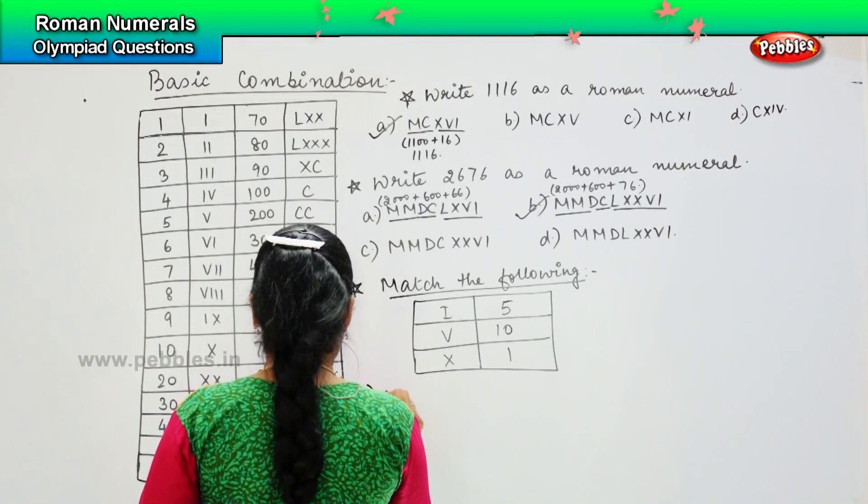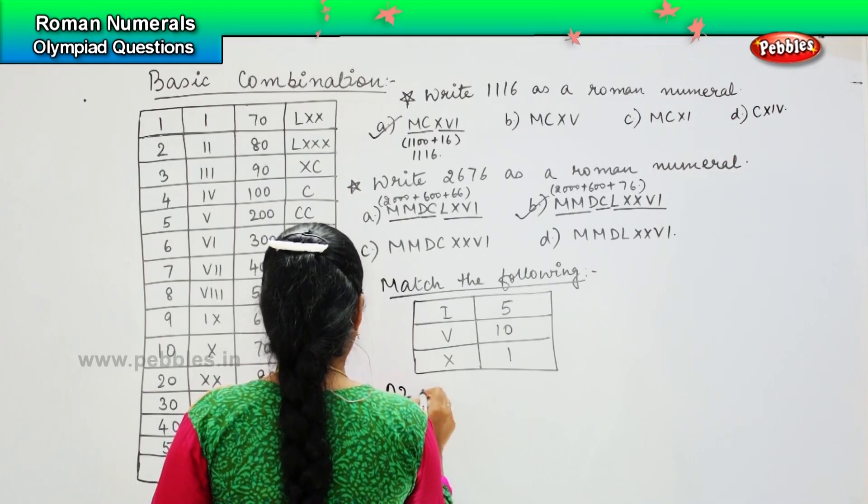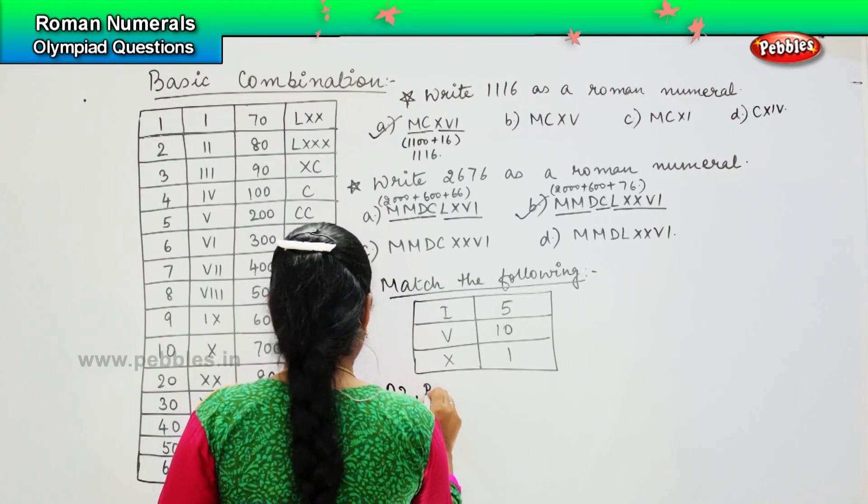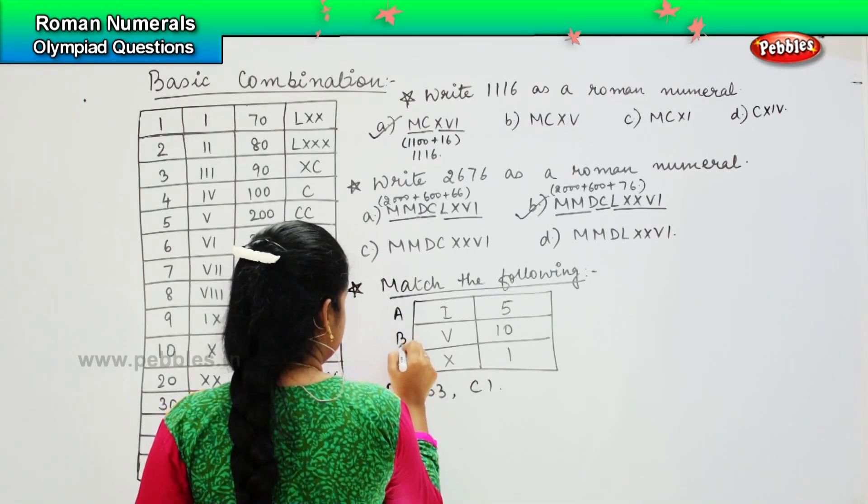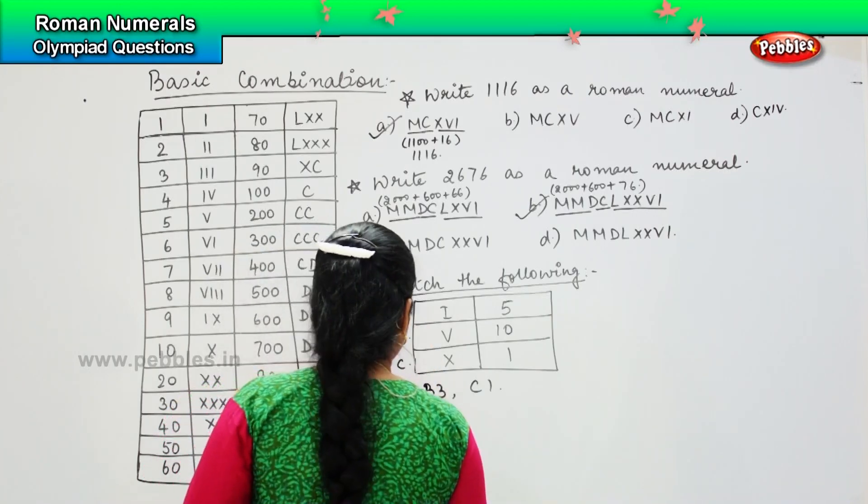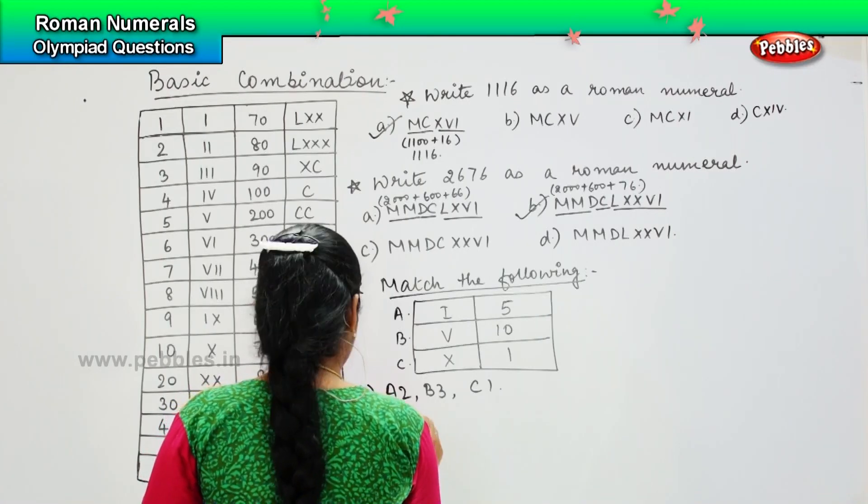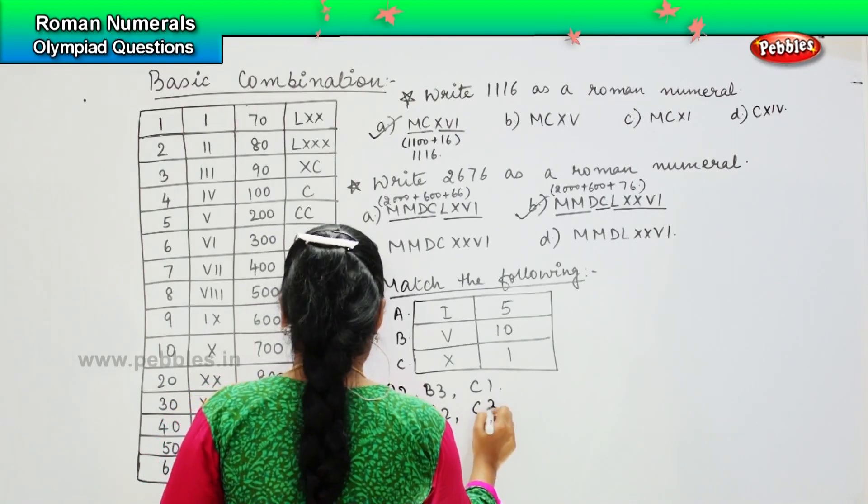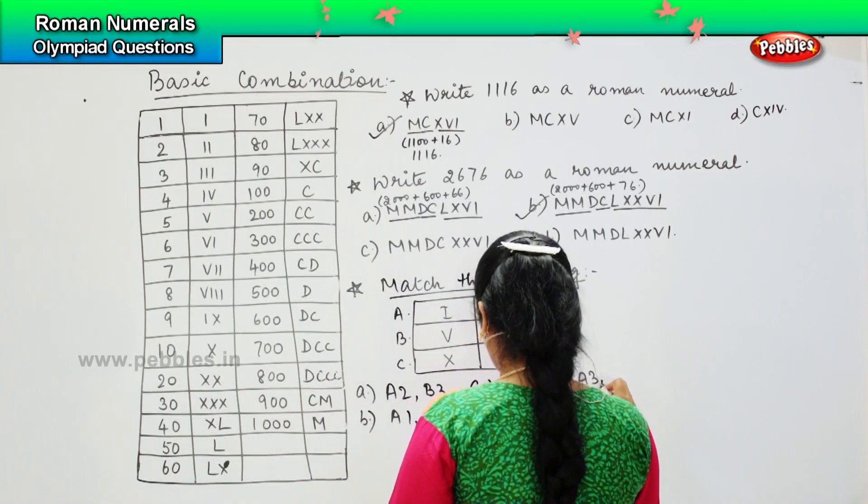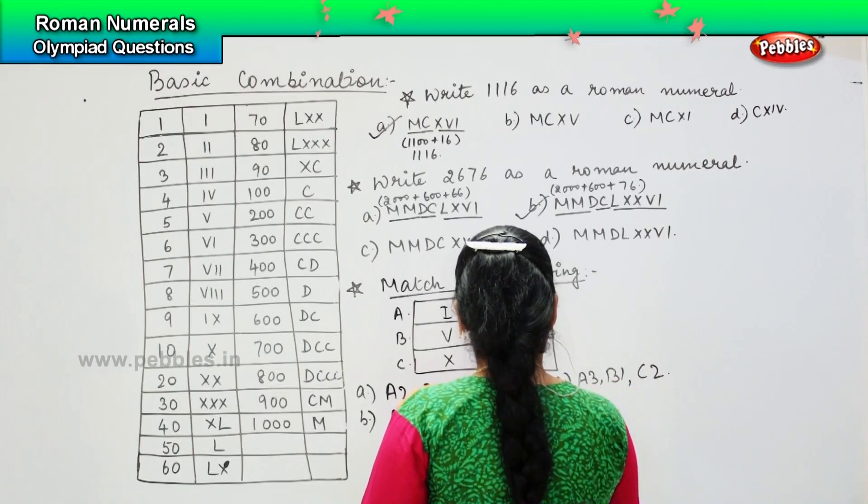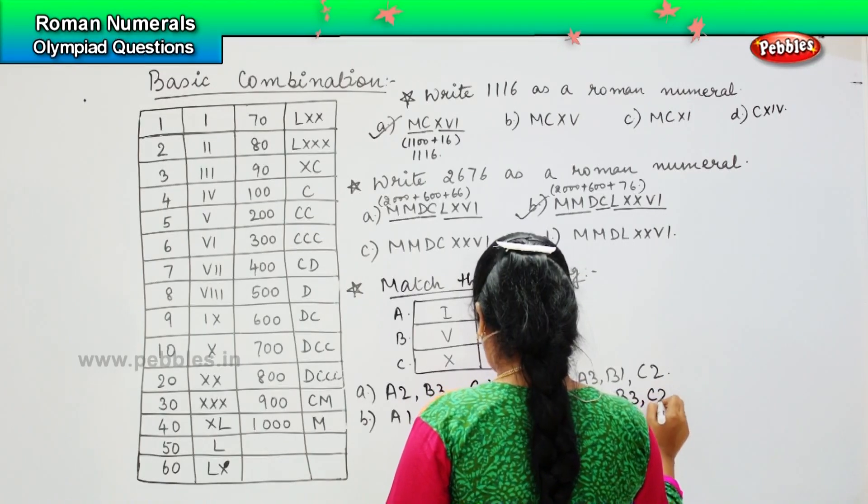And your options are: option A, A2, B3, C1; option B, A1, B2, C3; option C, A3, B1, C2; option D, A1, B3, C2.